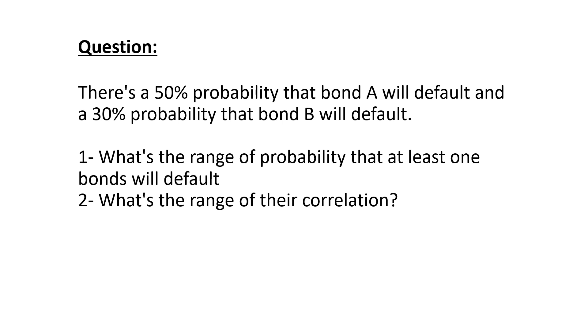There's a 50% probability that bond A will default and a 30% probability that bond B will default. What's the range of probability that at least one of the bonds will default, and what is the range of their correlation?